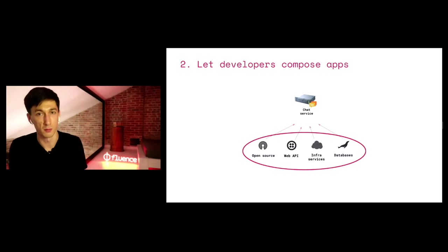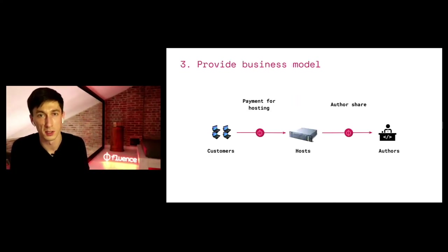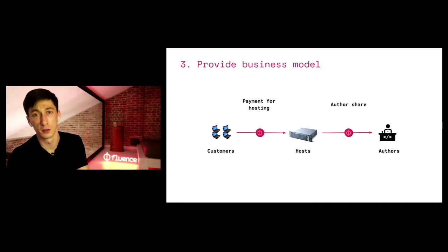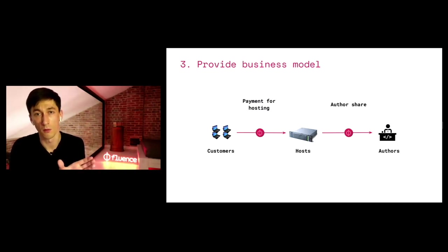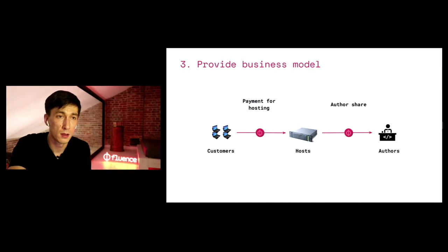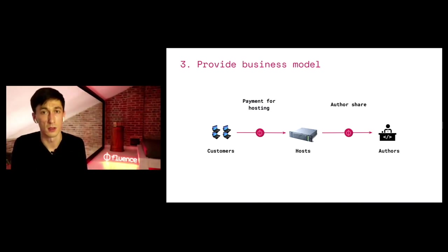If there is a business model, then you can benefit from it. The third thing we need is this business model, and the way it works on Fluence: customers or application developers themselves pay for hosting to hosting providers, but a part of this hosting payment goes to authors of all the components, applications and services used to build the final application. This is coded in the blockchain, so you cannot just say you're not paying the author — the payment for hosting always carries this author fee, essentially a royalty to authors of the applications, services and components used under the hood.